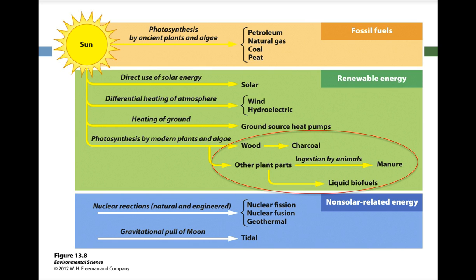Here we're looking at this section of the chart, which includes photosynthesis that was done by modern plants and algae. That would be wood becoming charcoal, plant parts ingested by animals becoming manure, burning crop residues, and also the creation of liquid biofuels.